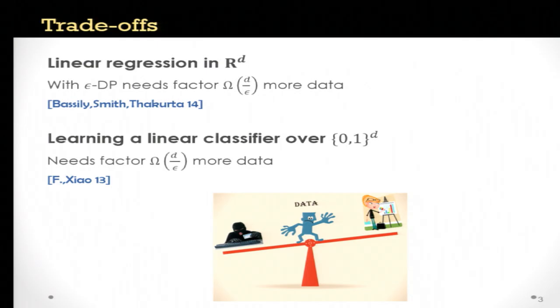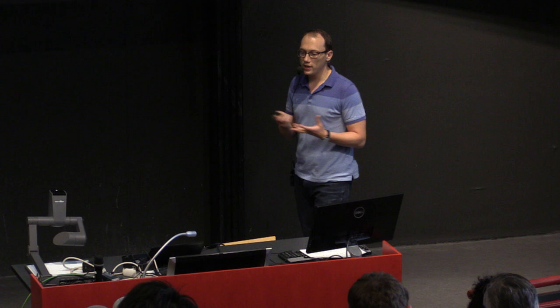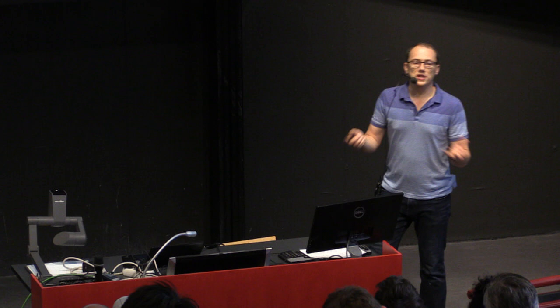For the standard linear regression problems in d dimensions, we know that achieving epsilon differential privacy requires roughly d over epsilon more data to achieve the same accuracy. What this means is that in many settings we just won't have enough data to both have sufficient accuracy and reasonable privacy guarantees, and we'd like to address whether there are settings where we can still do something useful.